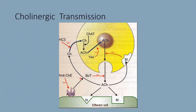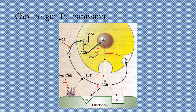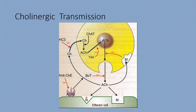Acetylcholine can act only for a fraction of a second. All neurotransmitters act briefly and are either removed or metabolized by enzymes almost immediately. For acetylcholine, the most important mechanism of termination is cholinesterase, also called acetylcholinesterase. The details of cholinesterase inhibitors will be discussed in coming classes.